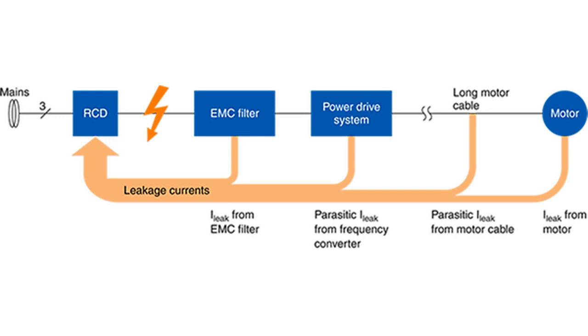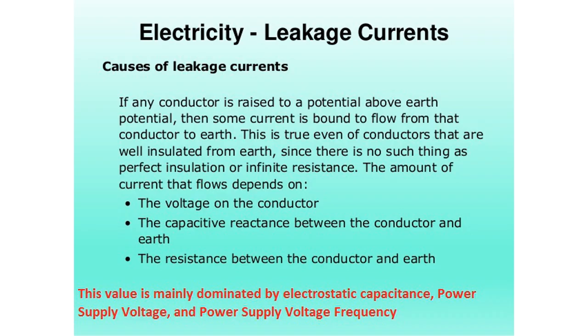Leakage Current: Leakage current is the current leaking from power supply lines to ground, when noise filters are inserted in power supply lines and a rated voltage is applied. This value is mainly dominated by electrostatic capacitance, power supply voltage, and power supply voltage frequency.